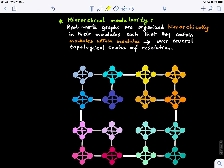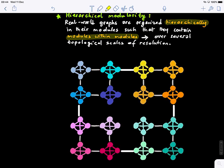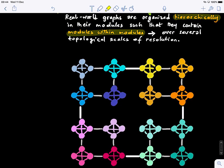Also, we notice that there is hierarchical modularity in real-world graphs. So what is hierarchical modularity? We have graphs that are organized hierarchically in their modules such that they contain modules within modules. Over several topological scales of resolution, we can see that as we zoom in on the graph, we'll see more fractal modules appearing.